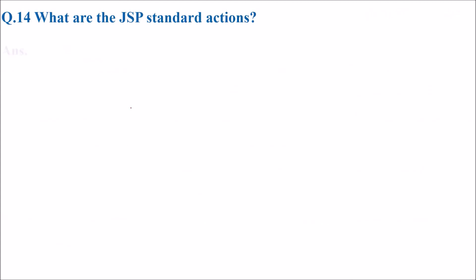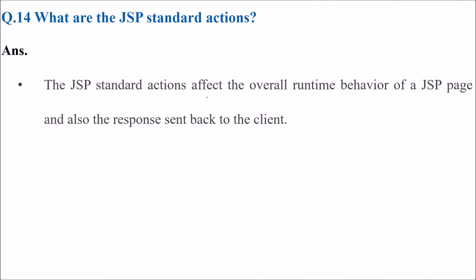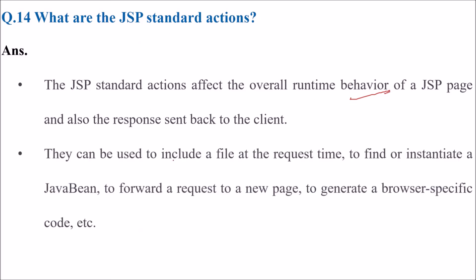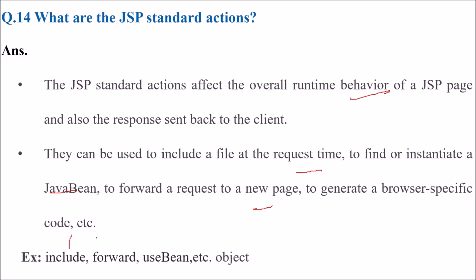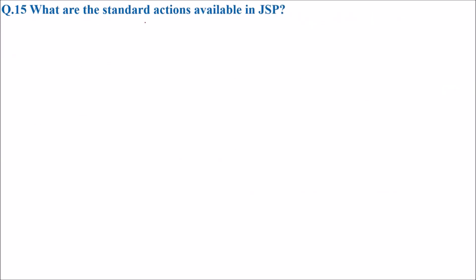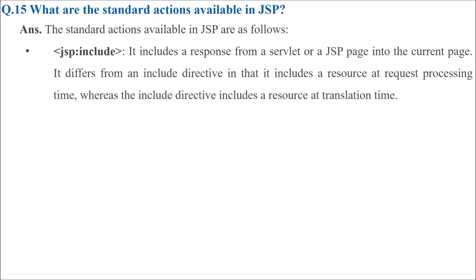What are JSP standard actions? JSP standard actions affect the overall runtime behavior of the JSP page and the response sent back to the client. They can be used to include a file at request time, instantiate a Java bean, forward a request to a new page, or generate browser-specific code. For example, the standard actions include, forward, and use bean. JSP include includes the response from a servlet or JSP page into the current page at request processing time, whereas the include directive includes a resource at translation time.